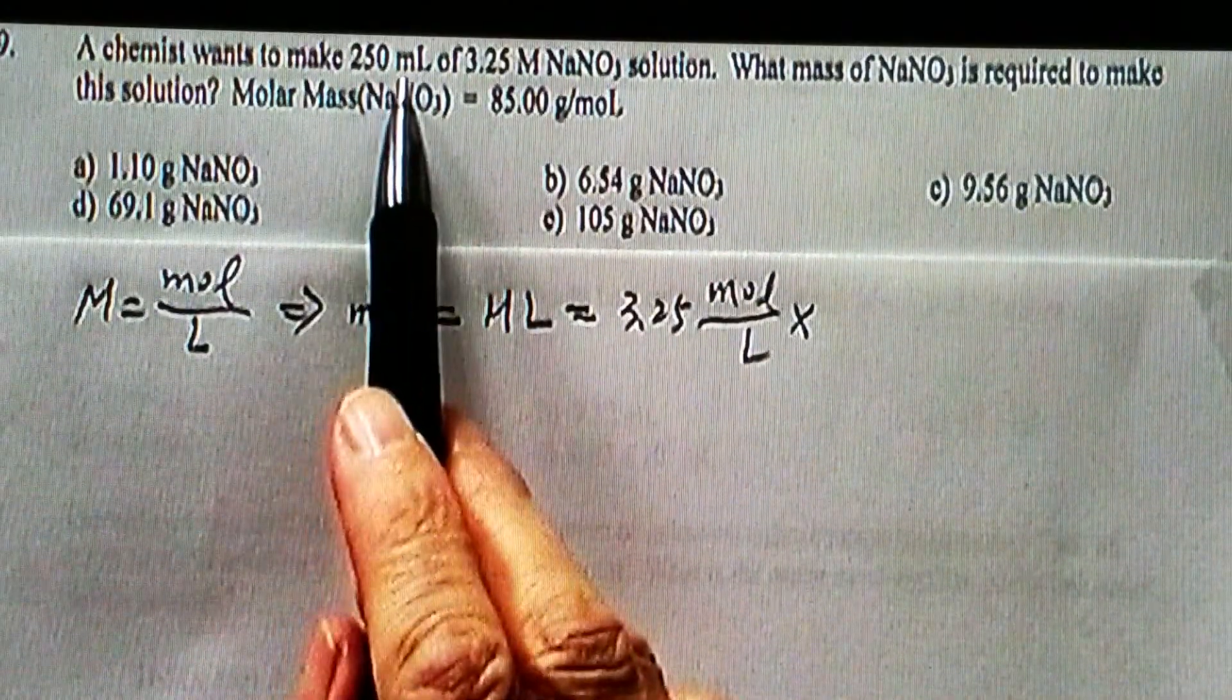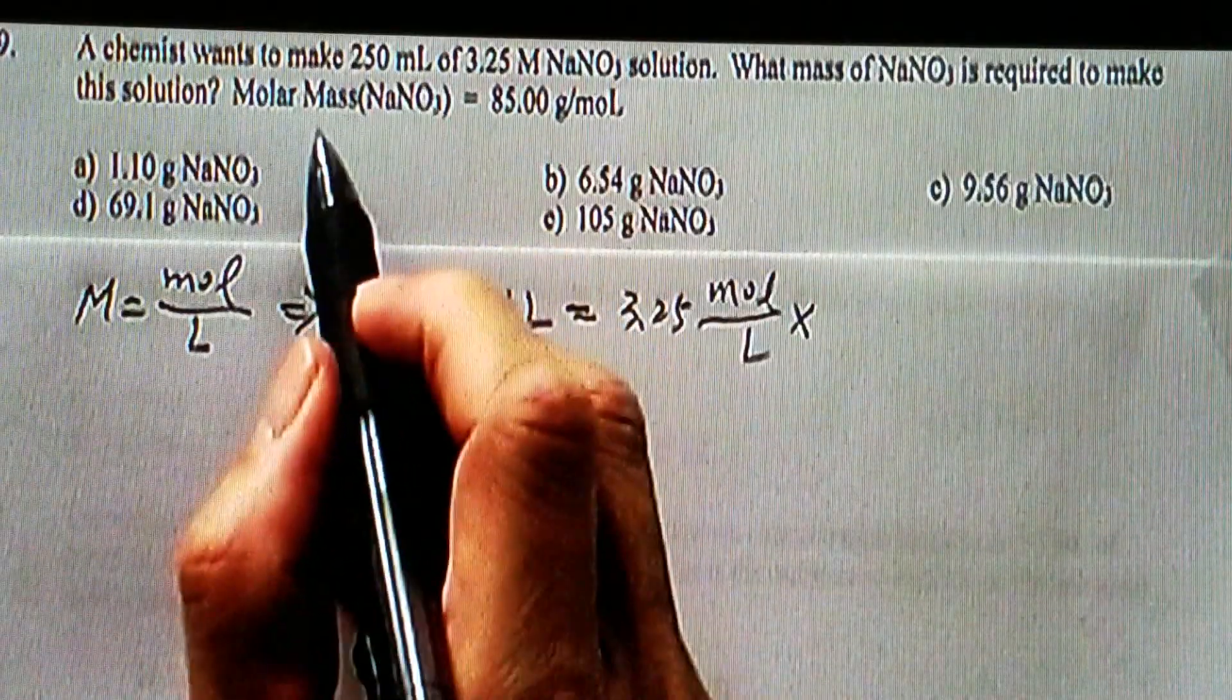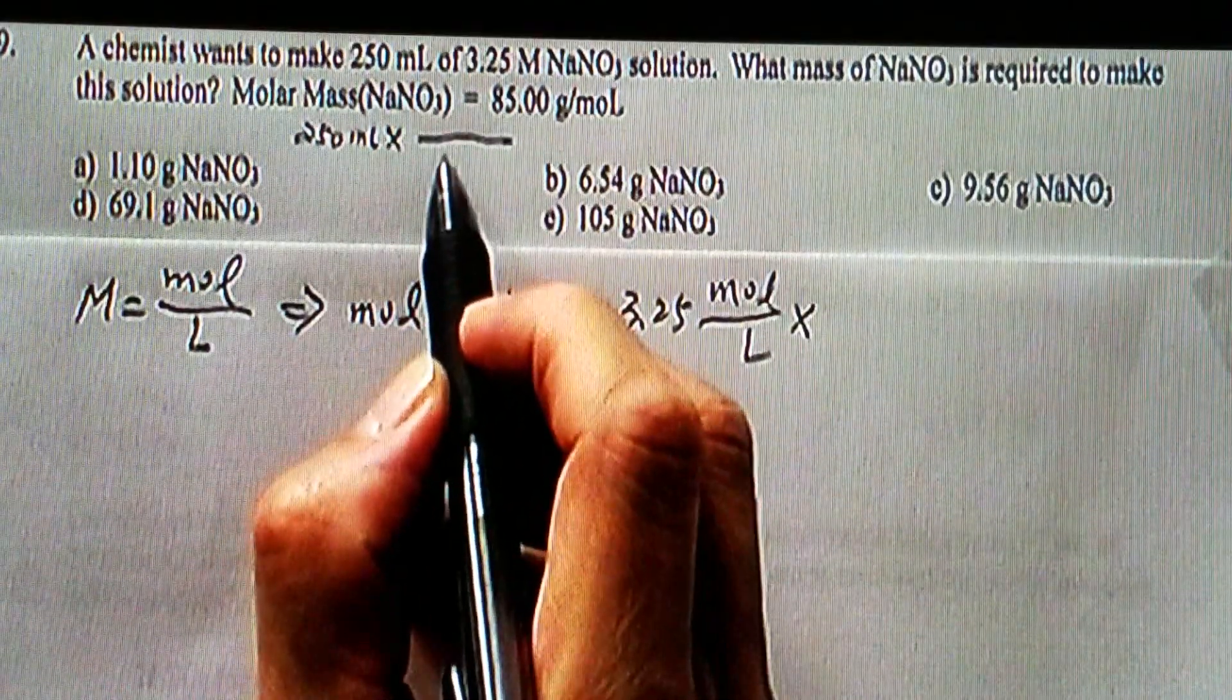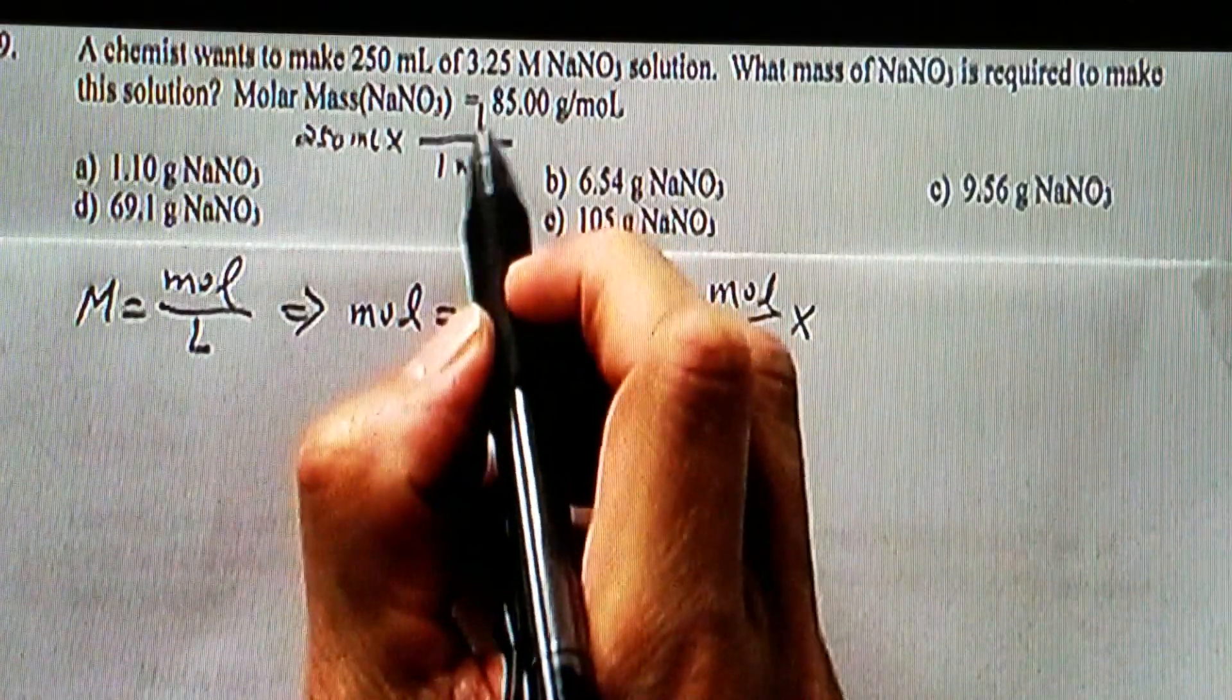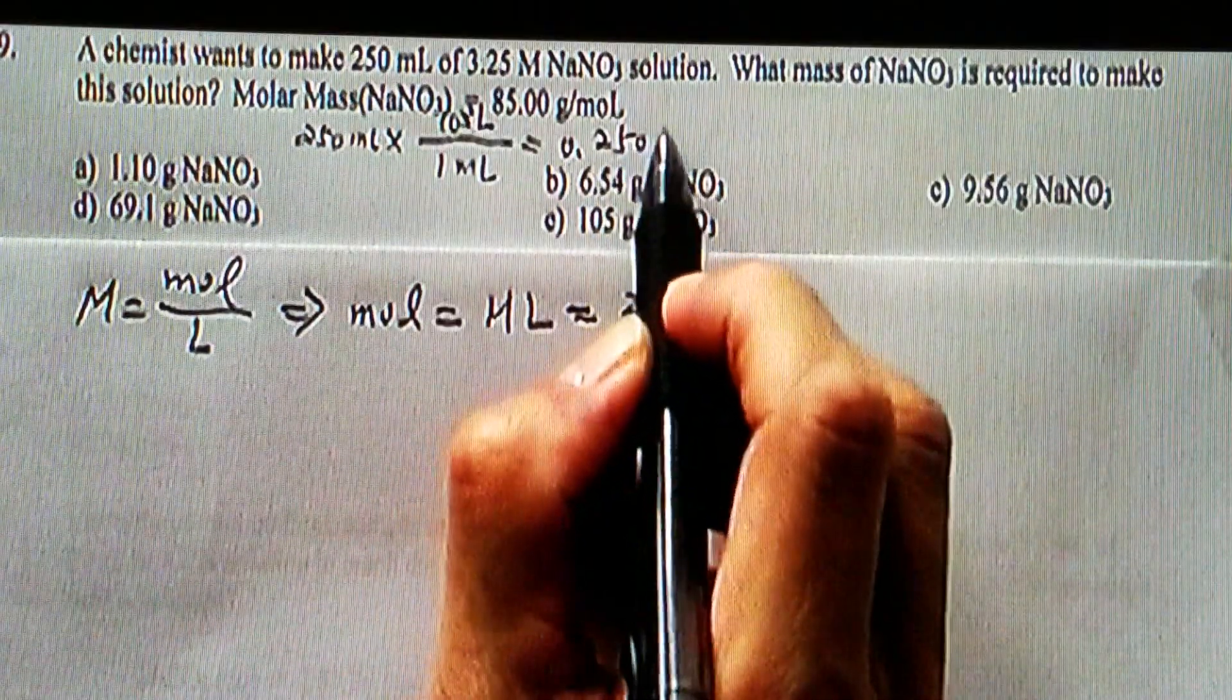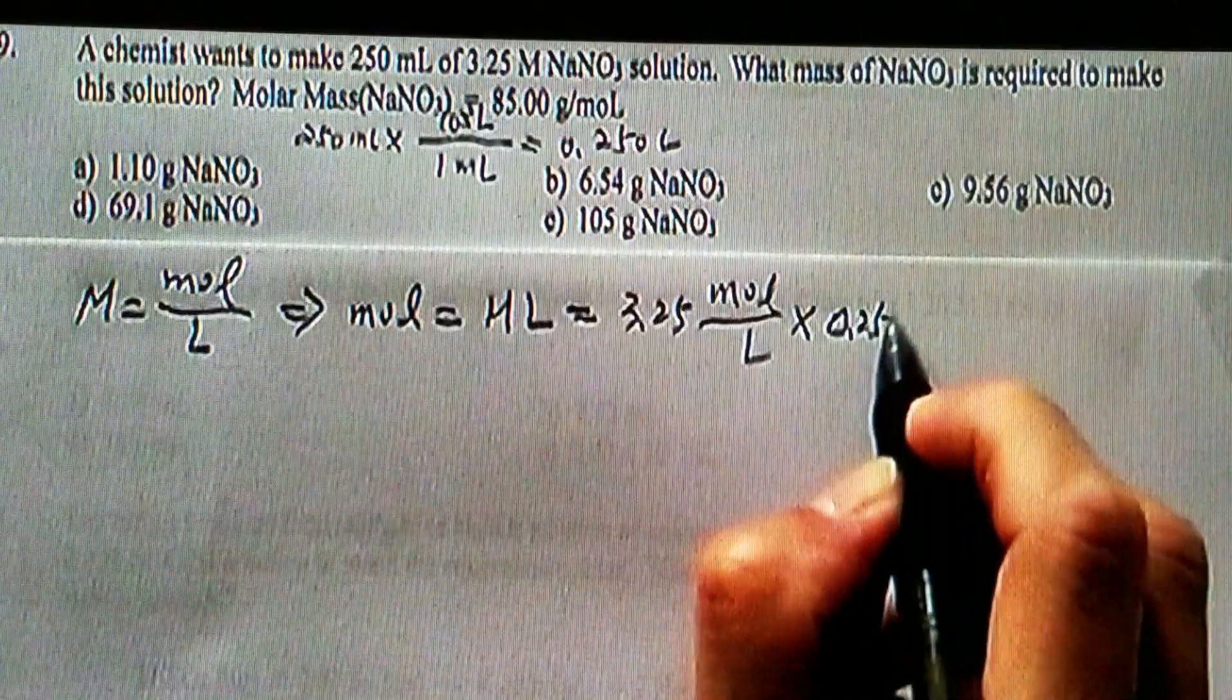Here, milliliters is given. And this is equivalent to 250 milliliters. You can convert that to liters. That should be times 10 to the negative 3, and that would give us 0.25 liters. So we'll take that number here.